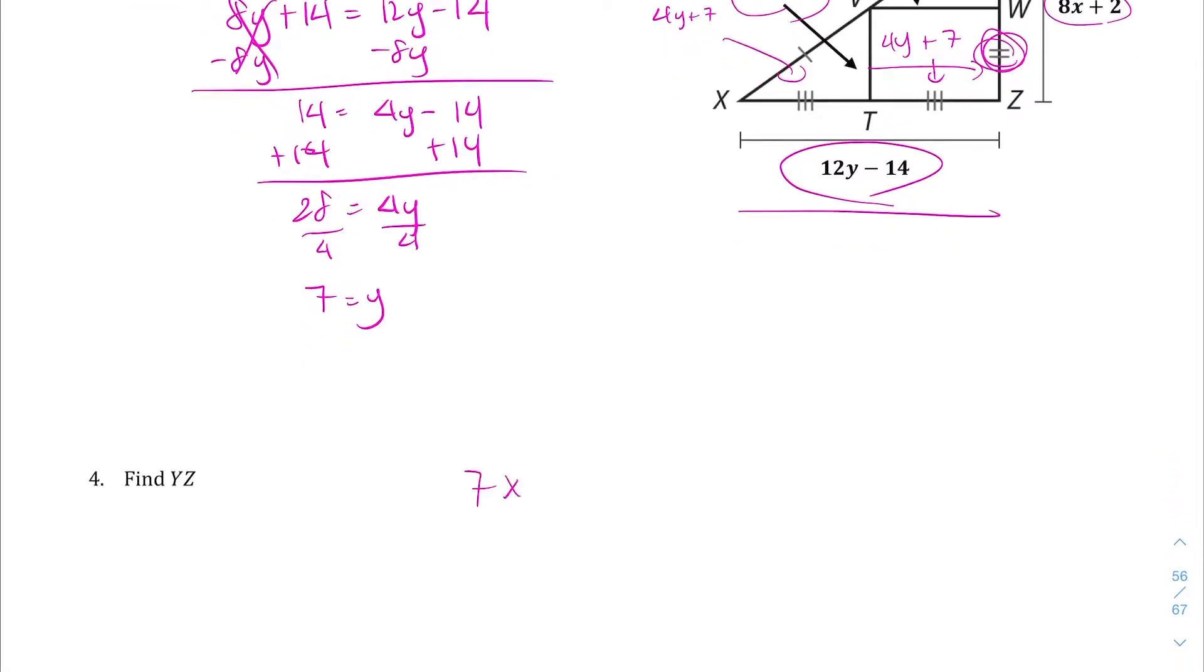Let's combine like terms, so variables or terms with variables, and terms without variables. So 7X plus 7X is going to give me 14X. Negative 17 plus negative 17 is going to give me negative 34 equals 8X plus 2.